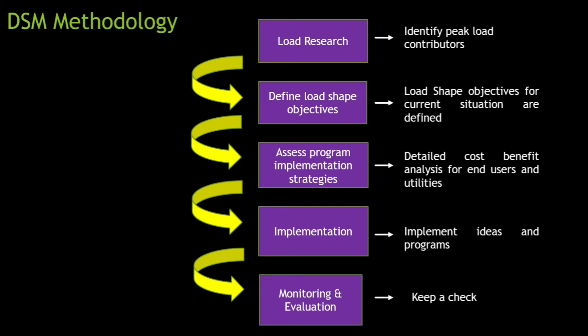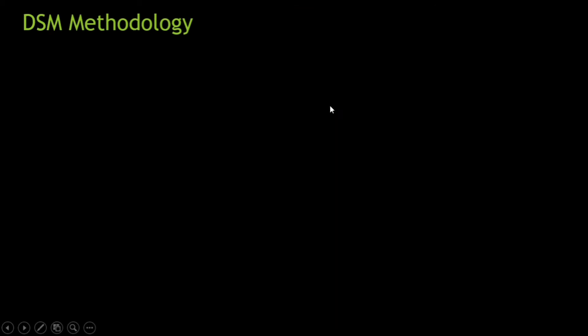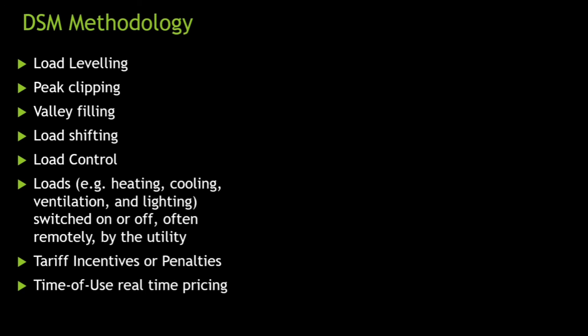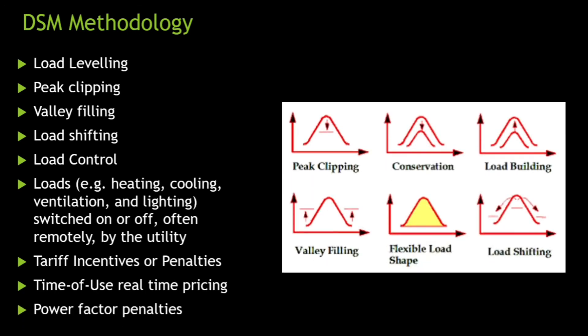Now let us discuss more about defining load shape objectives. The rest of the methodology is relatively easy to understand, but this part requires more attention. Load shape objectives include: load leveling, peak clipping, valley filling, load shifting, load control, and load heating, cooling, ventilation, and lighting — which can be switched on or off, often remotely by the utility, through tariff incentives or penalties in time-of-use and real-time pricing, and power factor penalties.